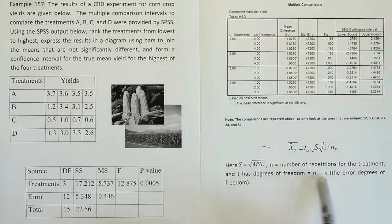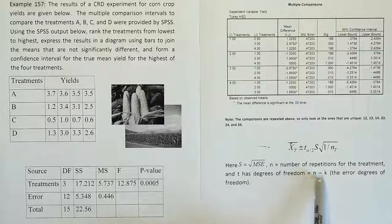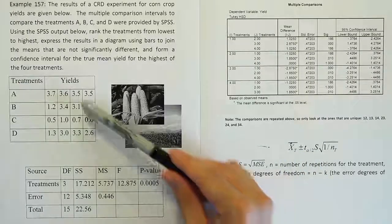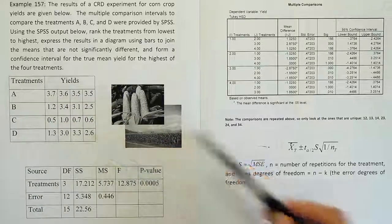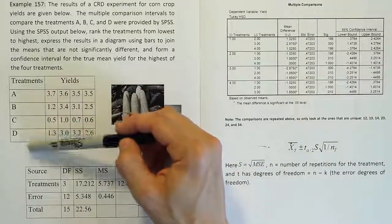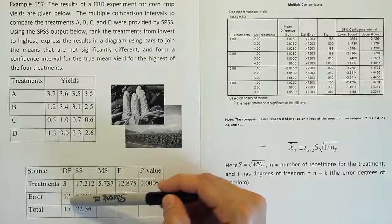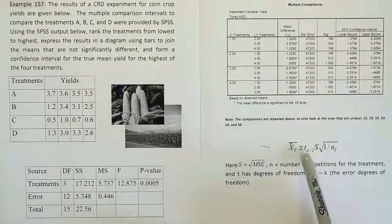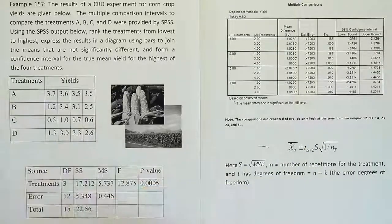And then finally, the degrees of freedom for the T that we have to come up with, the T alpha divided by 2, we're going to use N minus K. N is the total number of values here. We have 4, 4, 4, 4, that's 16. If you take away K, which is 4 treatments, the number of 4 treatments, you end up with 12. That's the same as the error degrees of freedom. So all you have to remember for the T alpha divided by 2, it has the same degrees of freedom as the error in the ANOVA table.